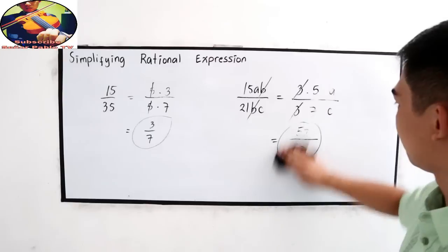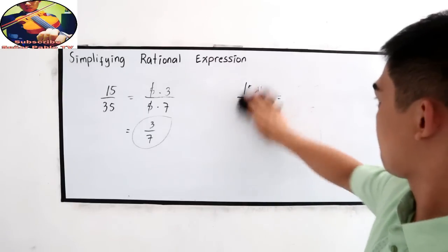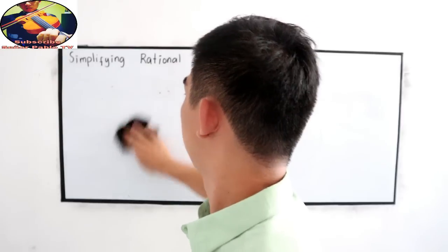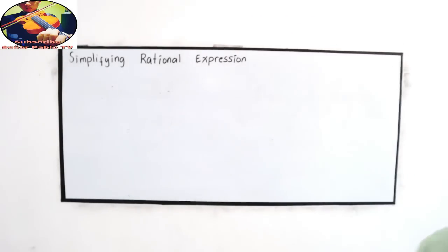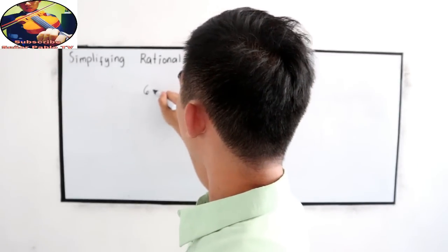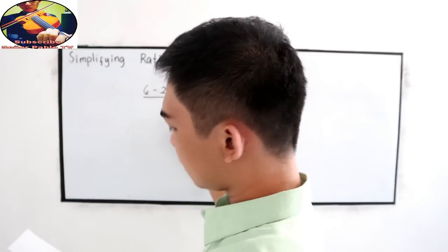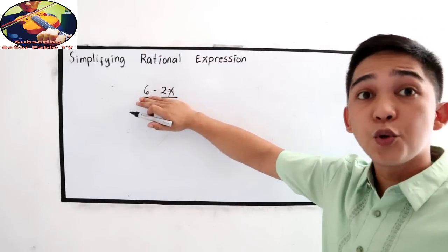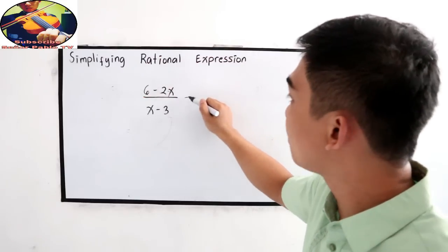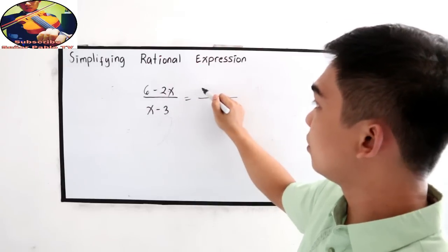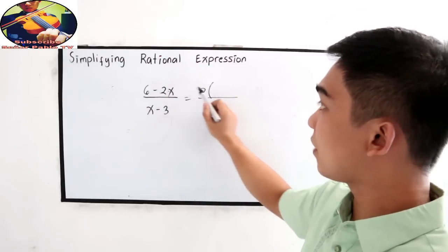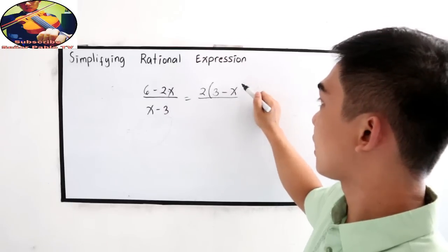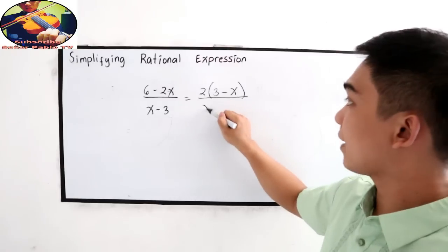Let's try another example. Let's say 6 minus 2x, all over x minus 3. Let's factor our numerator. By the greatest common factor, we have 2 times 6 divided by 2, that is 3, minus 2 divided by 2, which gives us x only.